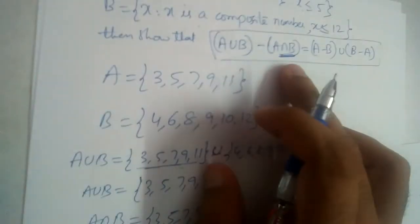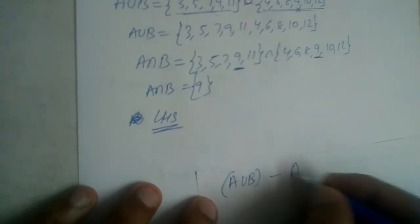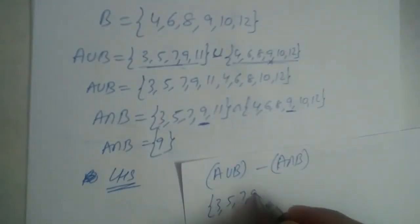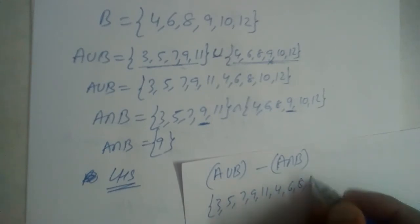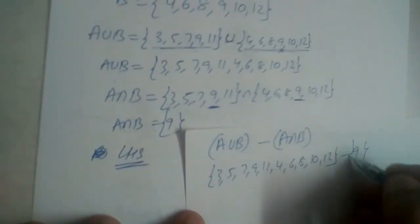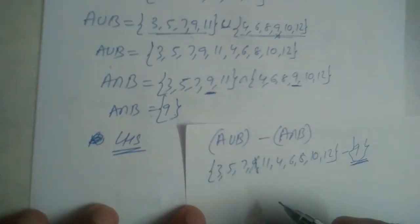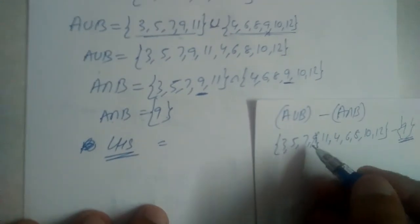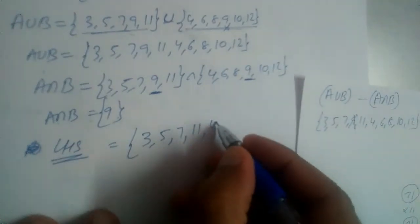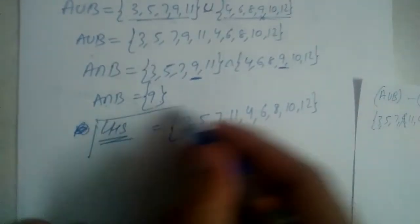Now let us find the LHS, which is A union B minus A intersection B. A union B is {3, 5, 7, 9, 11, 4, 6, 8, 10, 12} and A intersection B is {9}, so we remove 9 from A union B. LHS is therefore {3, 5, 7, 11, 4, 6, 8, 10, 12}.